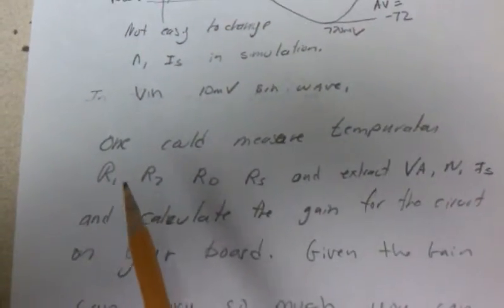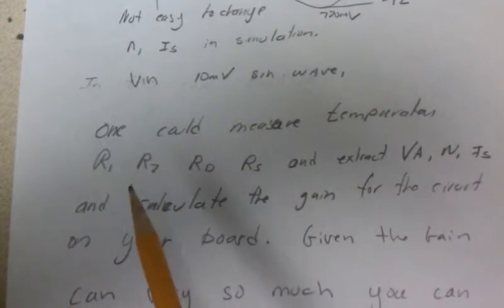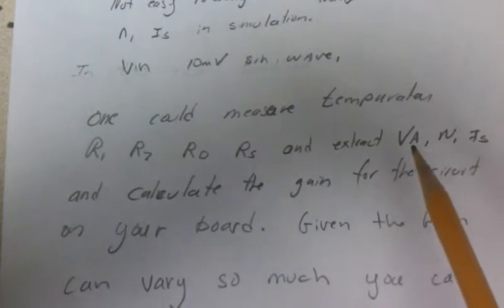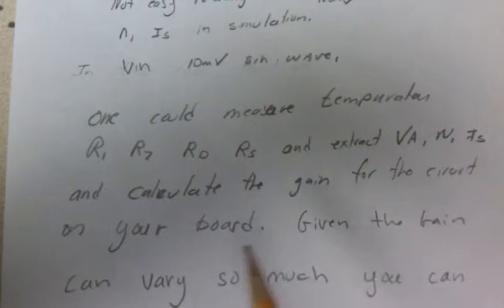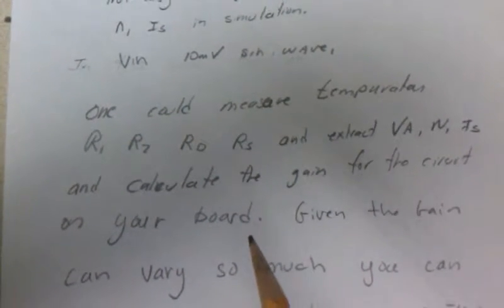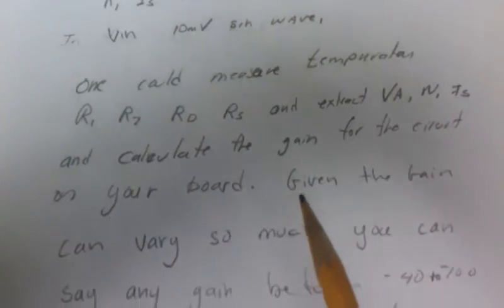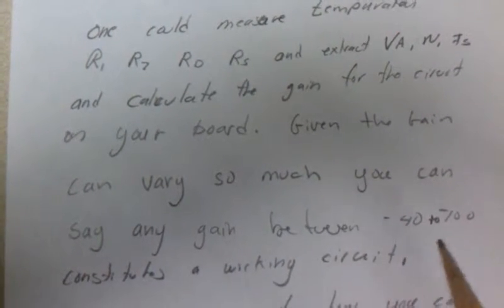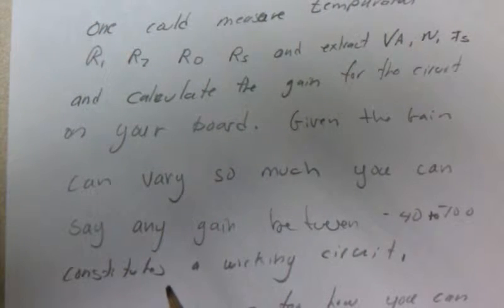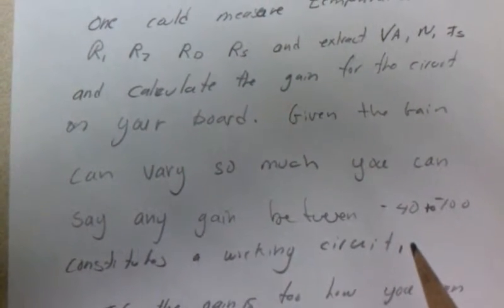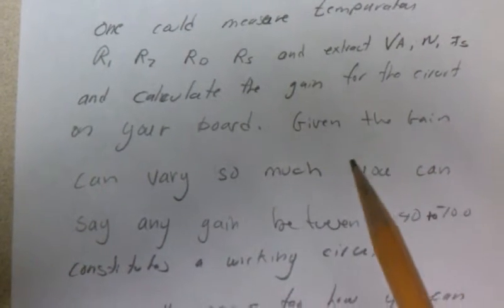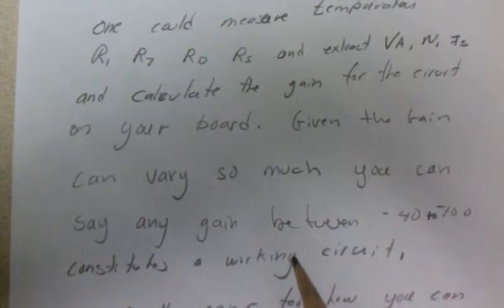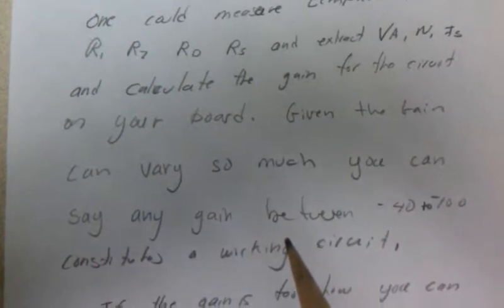The thing is you could measure your temperature in lab, all these values, you could extract these values and then calculate what your circuit should do. Given that your gain can vary so much between minus 40 and 100, anything in there could be considered a working circuit. You could go back and measure all that, you should be able to get your hand calculations to match what happened exactly.